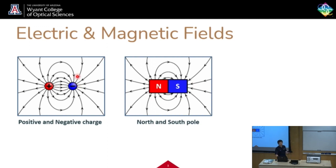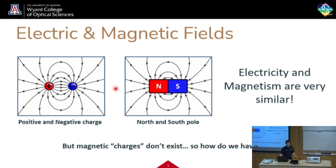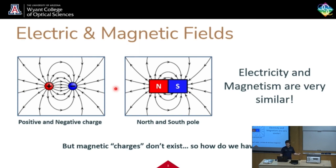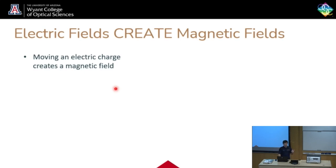That's because electricity and magnetism are very similar. But again, magnetic charges don't exist. We know where electric charges come from — like a static balloon comes from a bunch of electrons being on the balloon — but there's no magnetic particle like that. So where do magnets come from? They come from electric fields. Electric fields can create them.